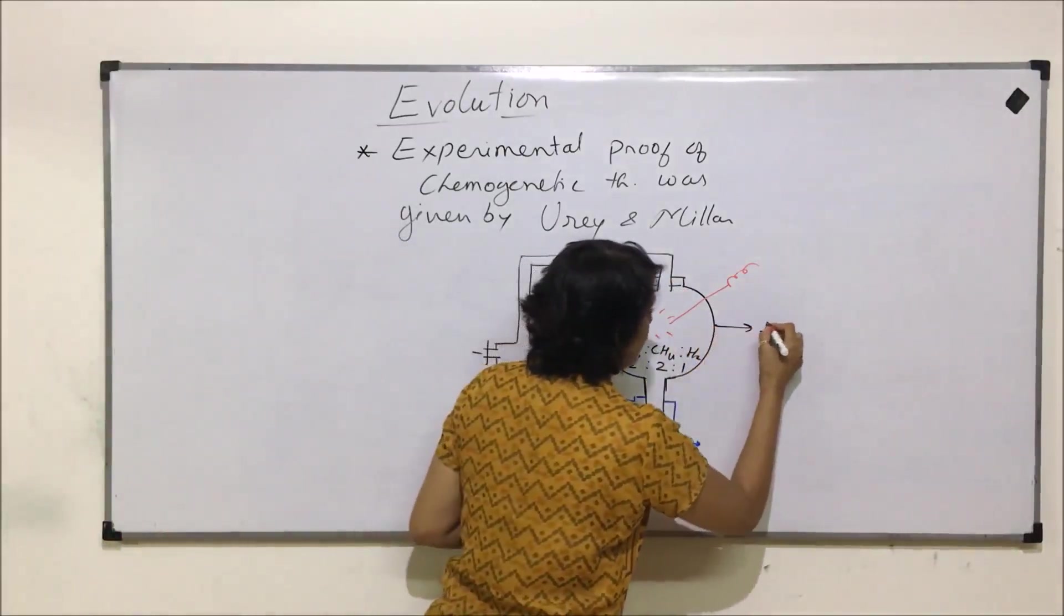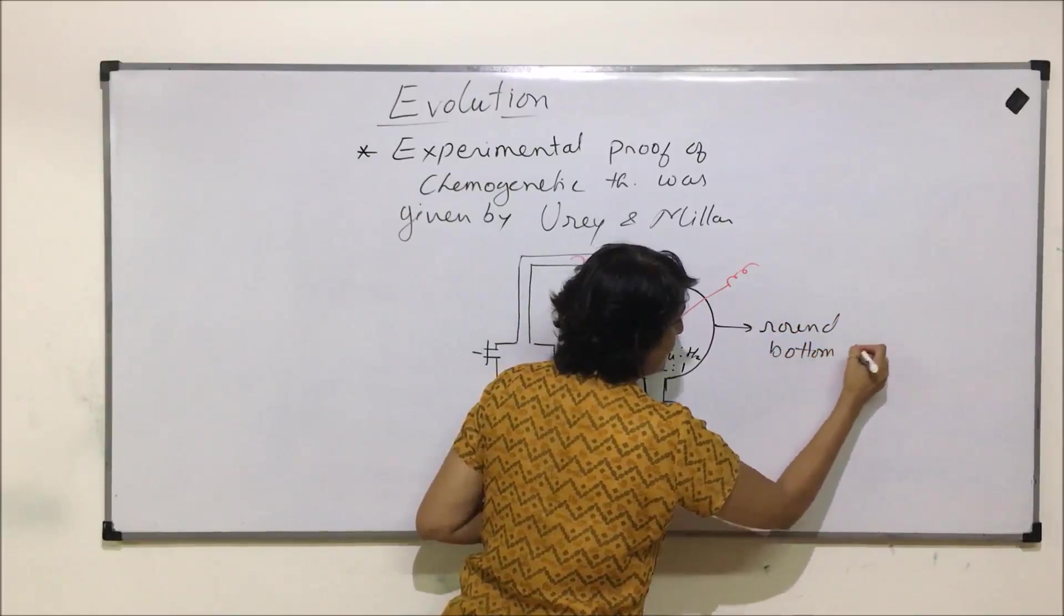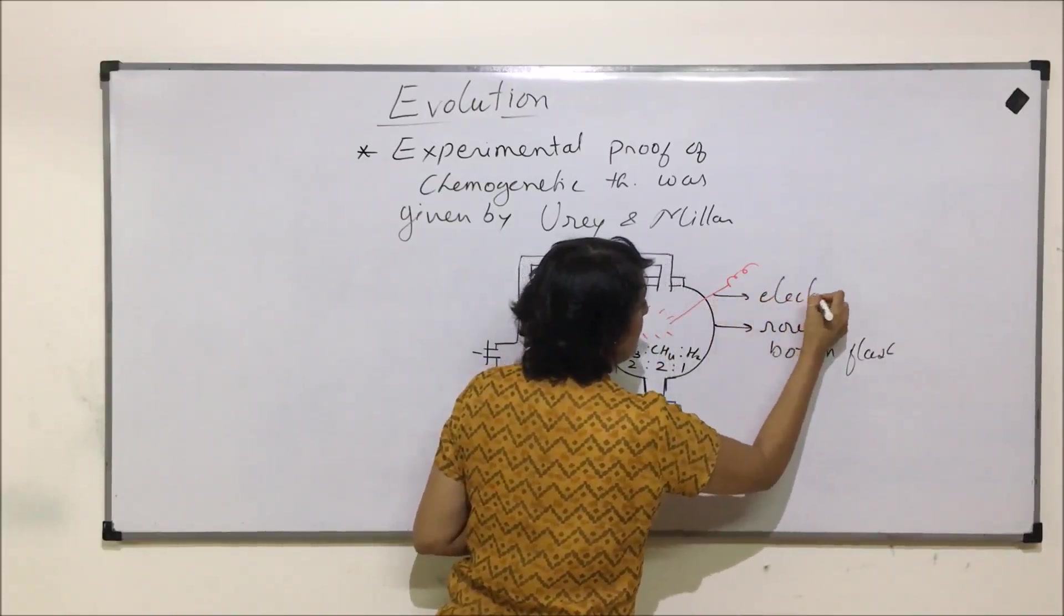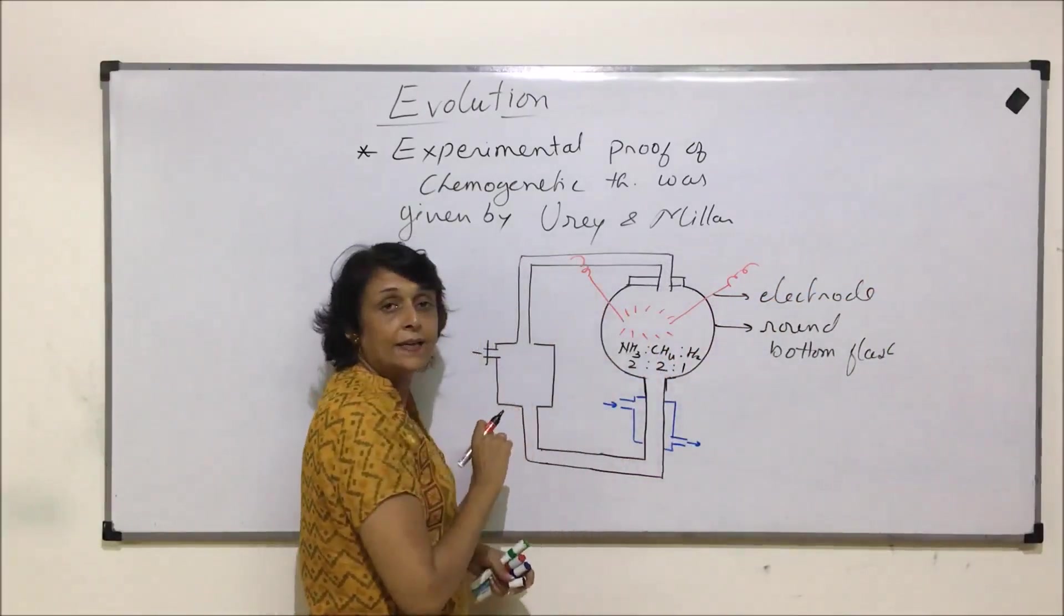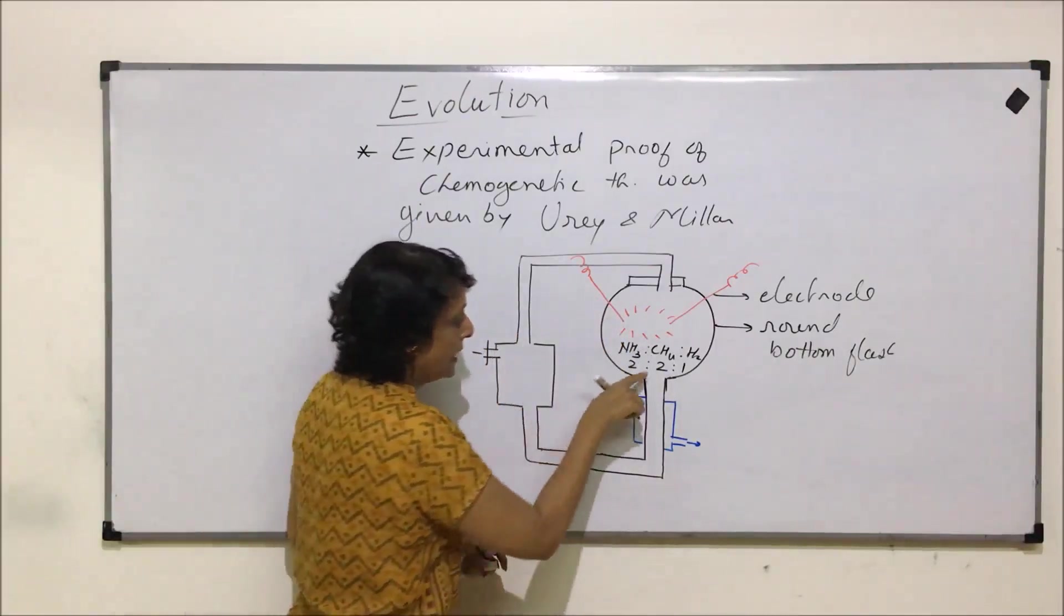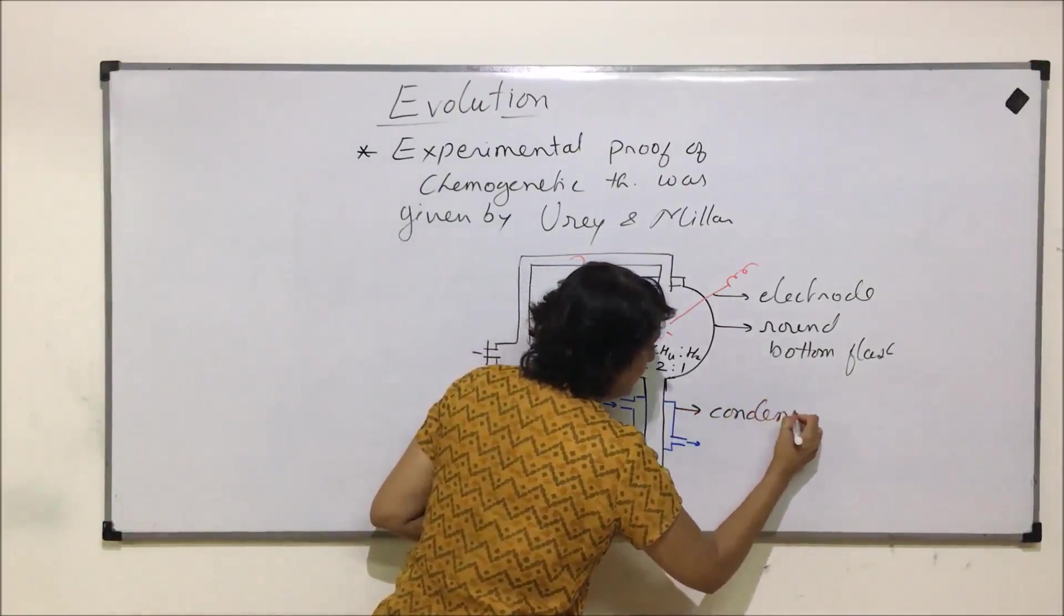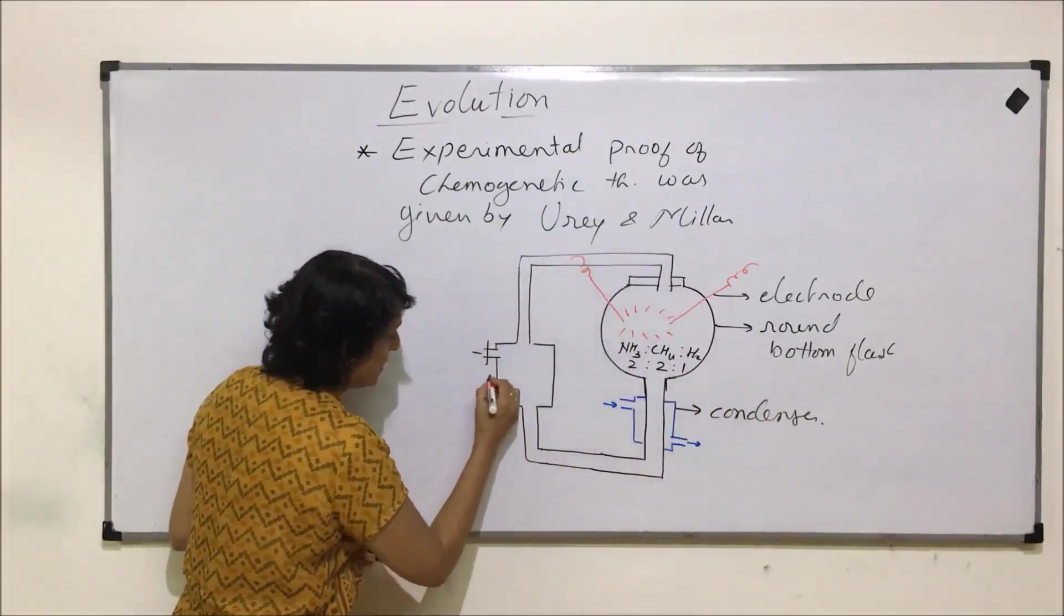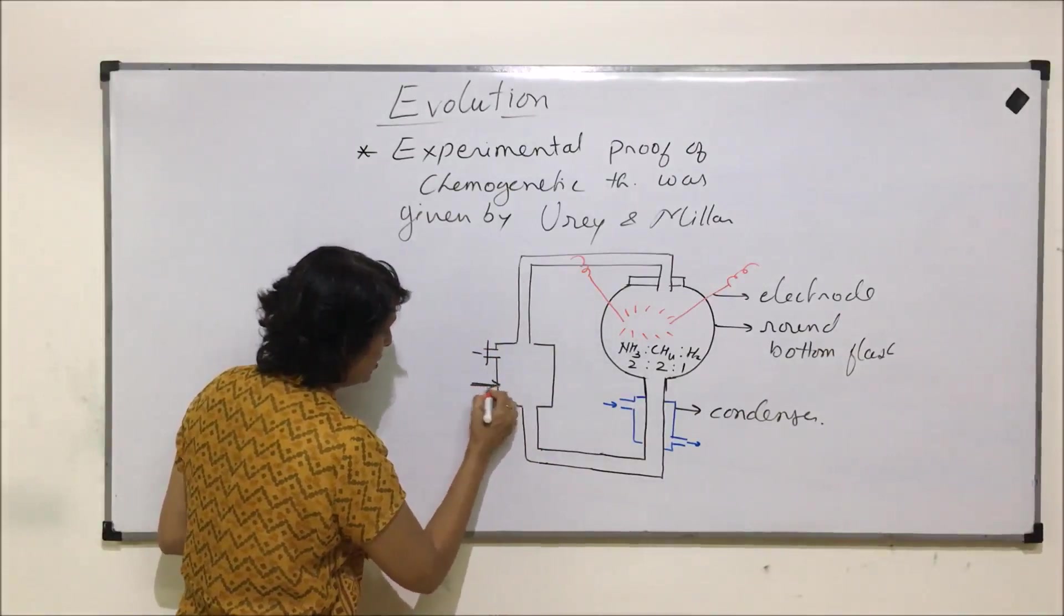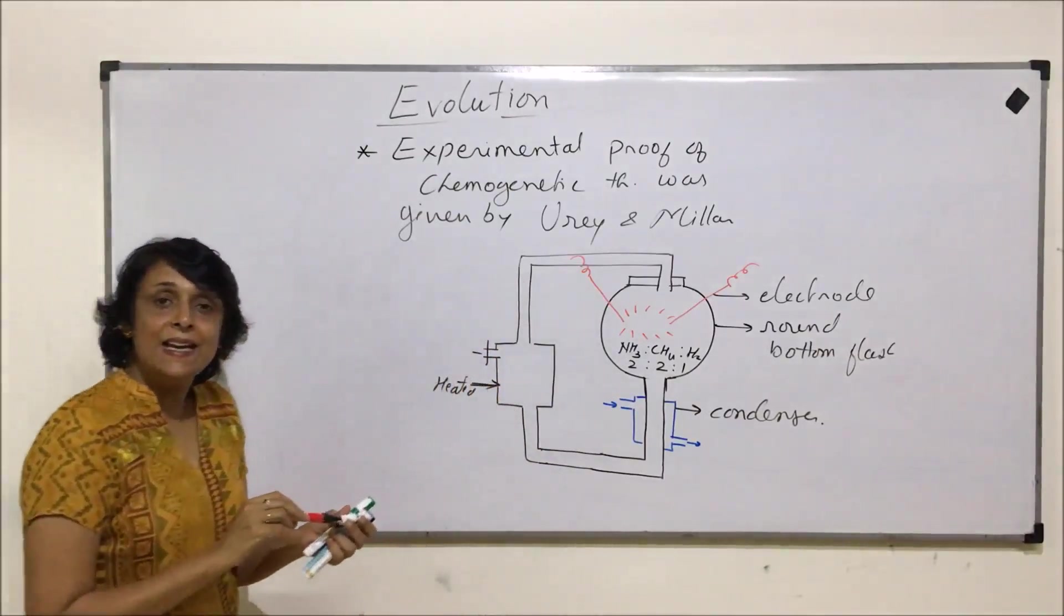This is the round bottom flask. By passing the electric current, a spark was generated. These were the gases, this is the condenser, and here this complete device was heated.